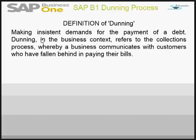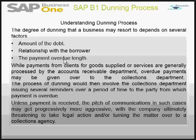The formal definition of dunning is: making insistent demands for the payment of a debt. In the business context, dunning refers to a collection process whereby a business communicates with customers who have fallen behind in paying their bills.